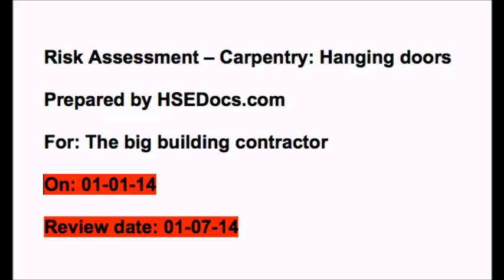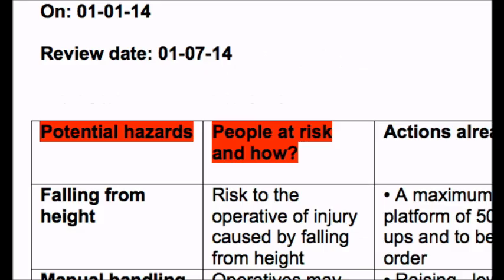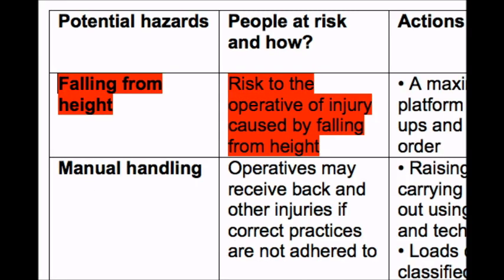Now we're ready to look at the first row of the form. Columns 1 and 2 are linked together — they are a list of potential hazards, the people that may be at risk, and how they are at risk. This risk assessment is for hanging doors and the first hazard is falling from height. It's safe to presume that the only person at risk from a fall would be the operative, as he would need no more additional height than to reach the top of a door. However, if this risk assessment had been about fitting soffits and fascias at a high level, the falling from height hazard could possibly affect the operative, others on site, and members of the public.